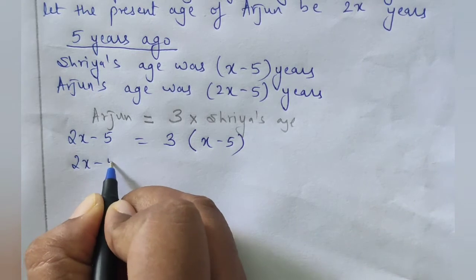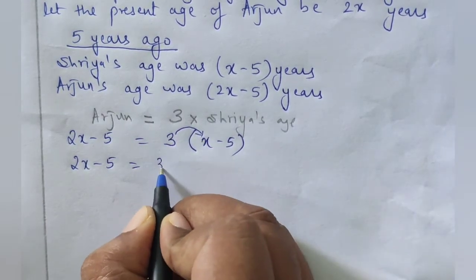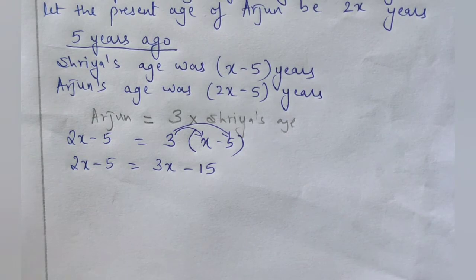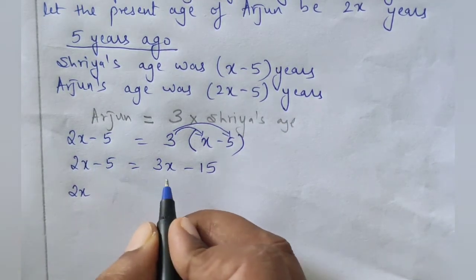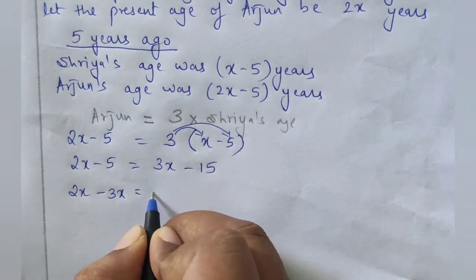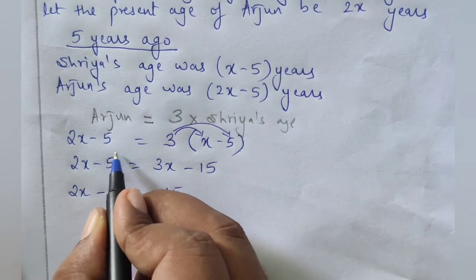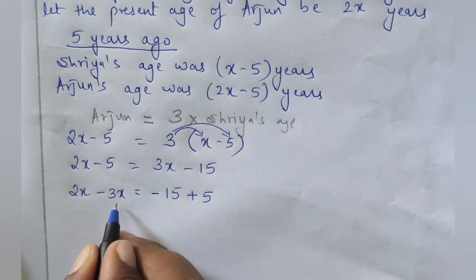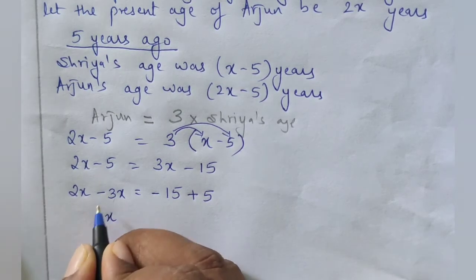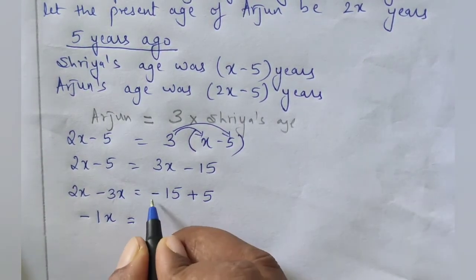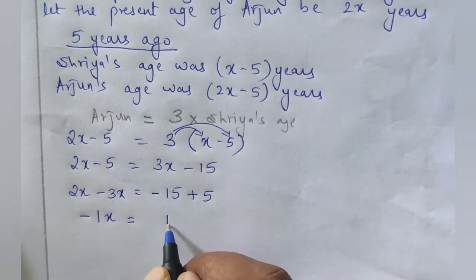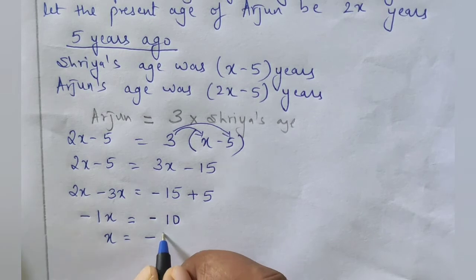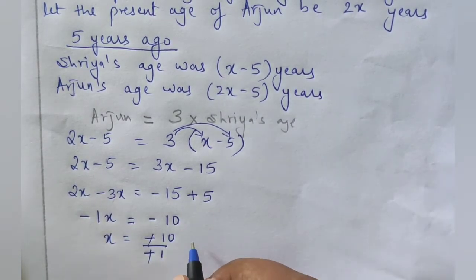Opening the bracket: 2x − 5 = 3x − 15. Bringing like terms together, transpose 3x to the left: 2x − 3x, and transpose −5 to the right: −15 + 5. So −1x = −10. Therefore x = −10 ÷ −1, and the minus signs cancel.